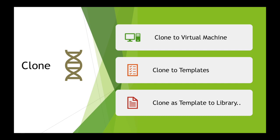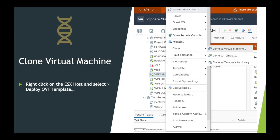The third option is clone as template to library, using the content library. This was introduced in version 6.7 and will be used heavily from version 7 onward. You can share templates across different vCenters from a single content library, which avoids duplicating templates everywhere. You also get version control on your templates. To access these options, right-click the VM, go to Clone, and you'll see all three options: clone to virtual machine, clone to template, and clone as template to library.